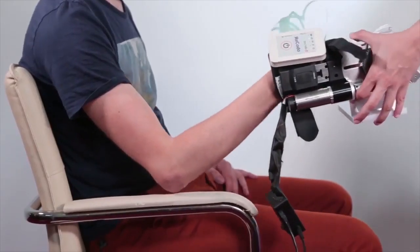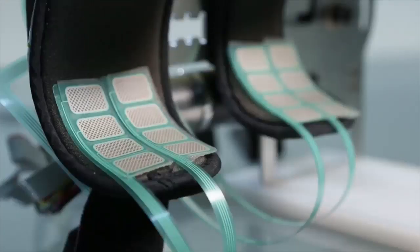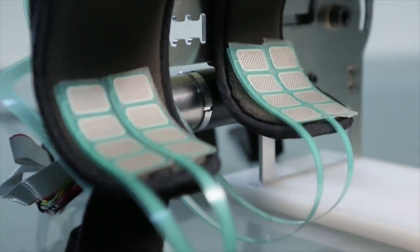RACOTO is simple to apply. Embedded multi-pad electrodes enable semi-automated location of the motor points of the triceps muscle.